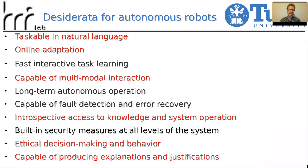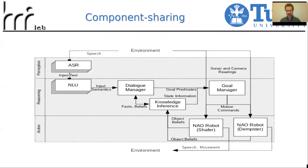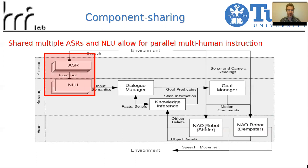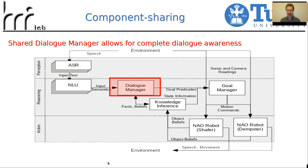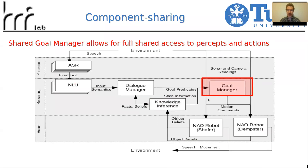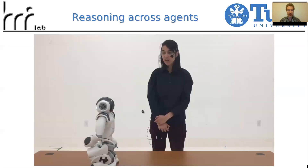The second demonstration focuses on taskability, online adaptation, multimodal interaction, introspective access, ethical decision-making, and producing explanations and justifications. In this case, we have a subset of the architecture with two different robot components, each representing robot sensing and actuation capabilities. We have multiple speech recognition and natural language components for multi-human instruction, along with one shared dialogue manager, one shared knowledge base, and one shared goal manager. This demonstrates the utility of sharing components across architectures, enabling immediate utilization of what one robot knows in another robot.